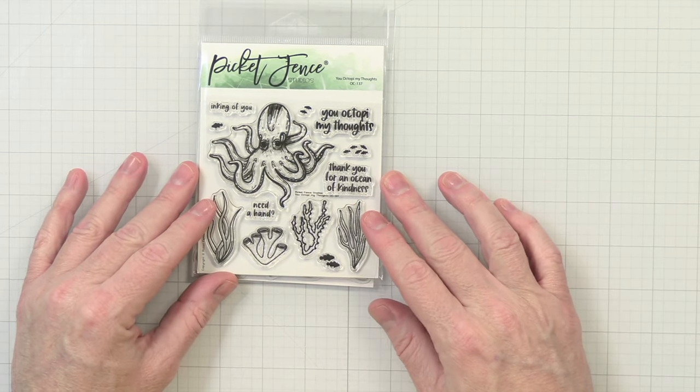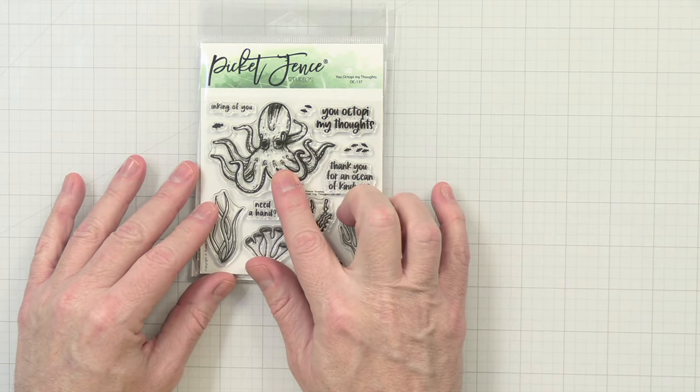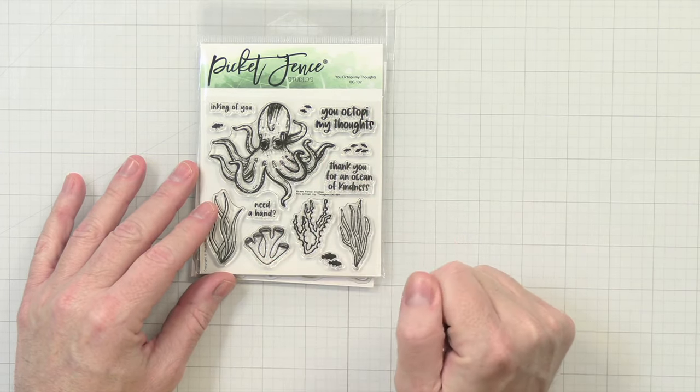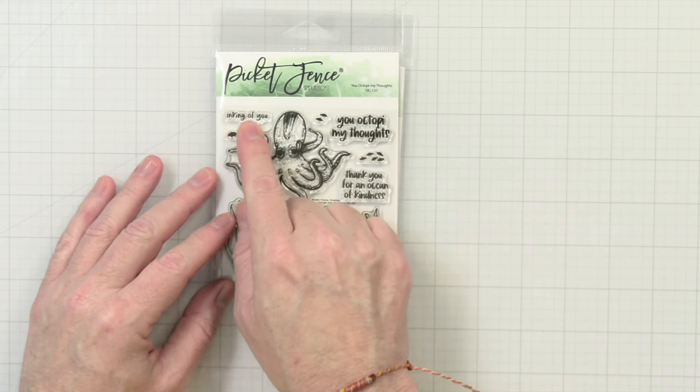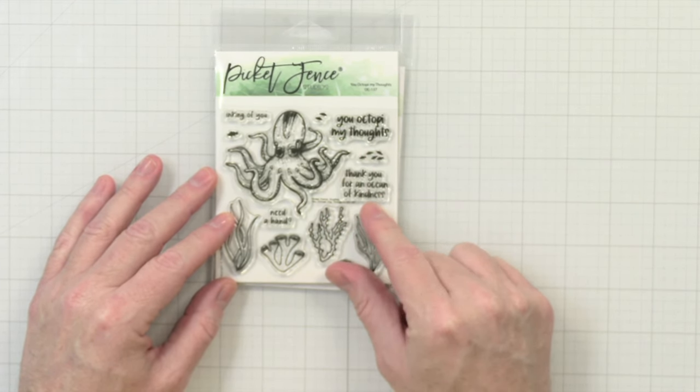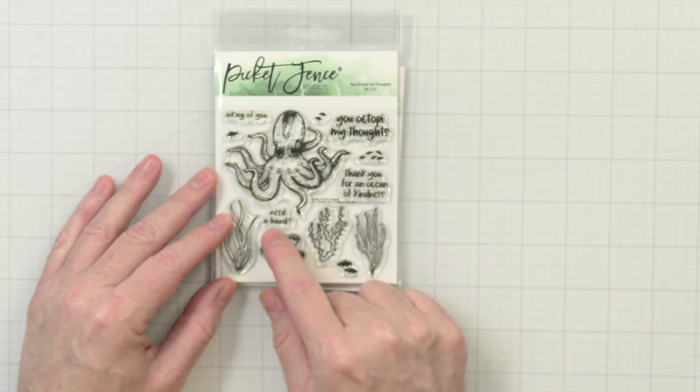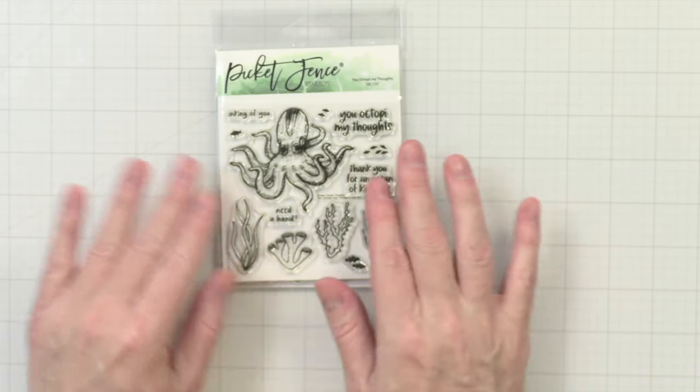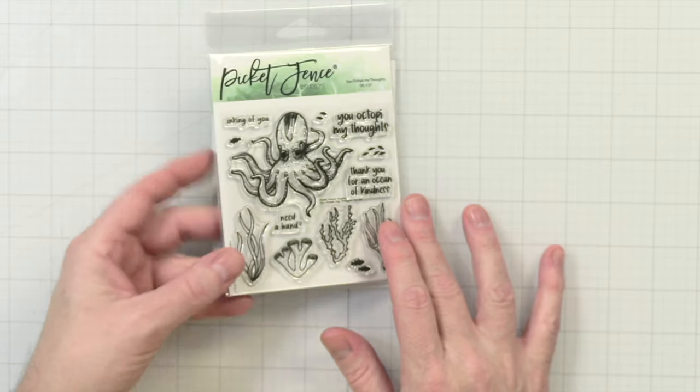Oh my god, even cuter. You octopi my thoughts. Really cute octopus. Anyway, inking of you, you octopi my thoughts, thank you for an ocean of kindness, need a hand. Really cute. Love the little pieces that adorn it, really great, and it does come with matching dies.